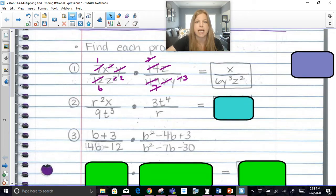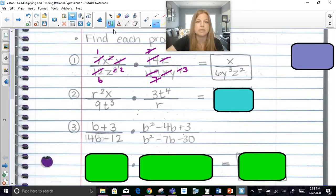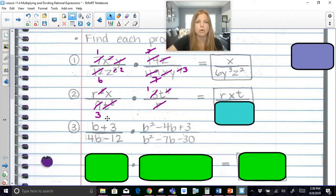Next one, let's look at the same process. So cross simplifying where I can. So I'm going to look at my numbers first, my coefficients. So 3 over 9 becomes 1 third. Then I've got r squared over r. So I'm going to cross out the r, make that just 1 r. X there's nothing to simplify out with. T cubed and t to the fourth. So if I cross out t to the third in the denominator, this just becomes t in the numerator. So I'm left with r, x, t over 3. That's it.